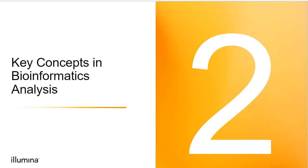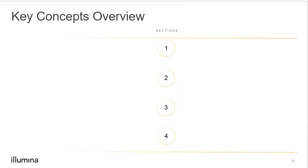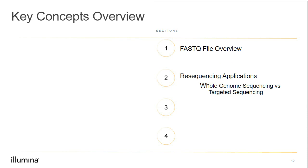With all of the experimental design considerations behind us, let's get to the main portion of this talk — key concepts in bioinformatics analysis. There are several flavors of analysis that could be performed; however, we're looking to discuss basic concepts like alignment, variant calling, assembly, and RNA-seq analysis. At this point, we've planned our experiment, we've sequenced, and we have our reads. In this section, we will discuss FASTQ file overview, resequencing applications including whole genome sequencing and targeted resequencing, different assembly applications, as well as RNA sequencing.